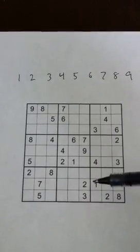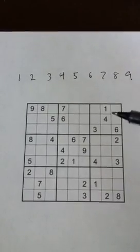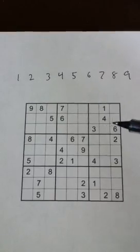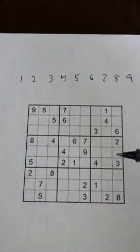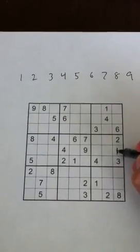Why? Because this box contains a one there, so nothing else in here can be a one, and this box contains a one here, so nothing here can be a one. So what does that mean? It means in this row there's only one other place left to put it, and yep, that's right there.